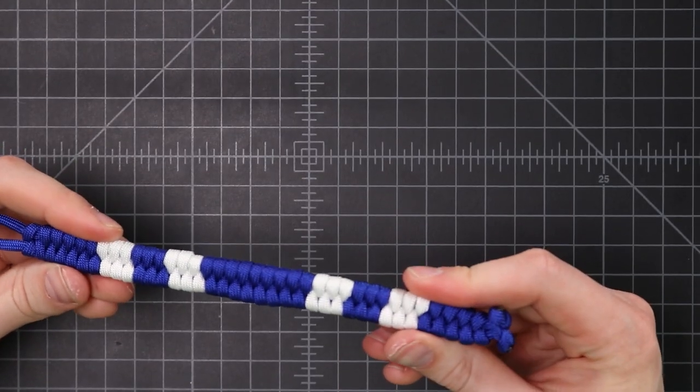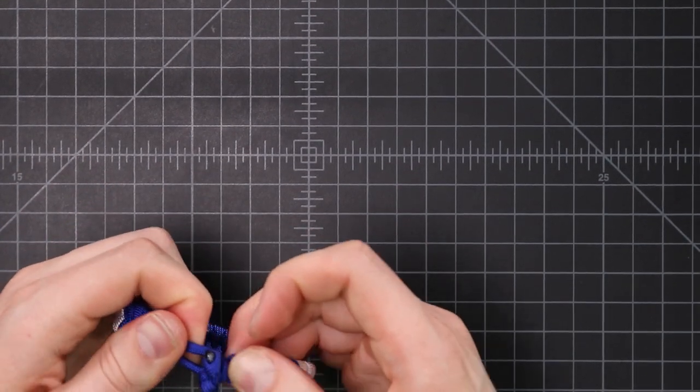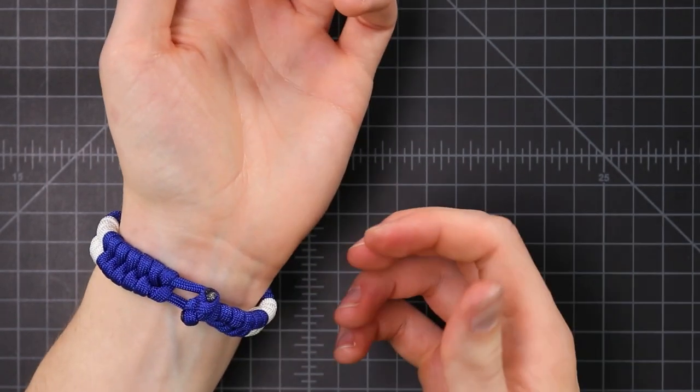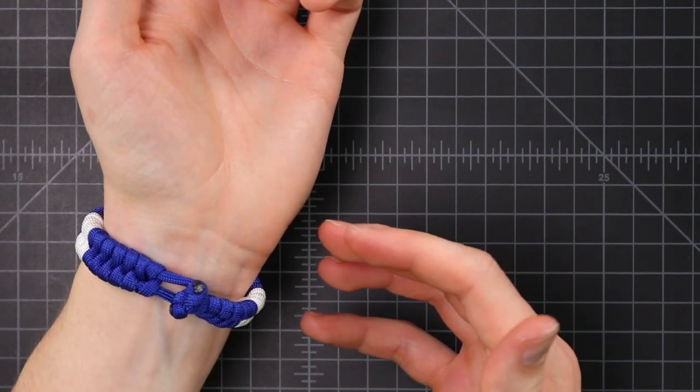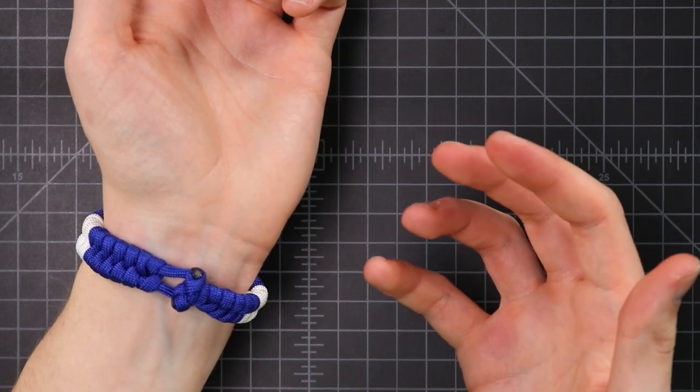We've got our stripes on top and our toggle knot on the end. If you want to know how to set up this bracelet, we just put out another video on that. It shows you how to make the toggle knot and set up the bracelet without a buckle.